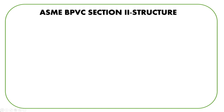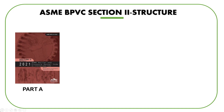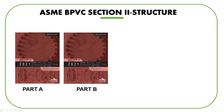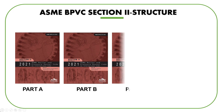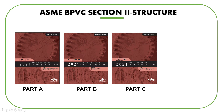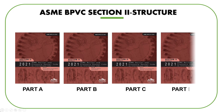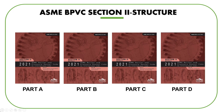The ASME BPVC Section 2 has been divided into four parts. Part A for ferrous material specifications. Part B for non-ferrous material specifications. Part C for specifications for welding rods, electrodes, and filler metals. Part D for properties of materials.